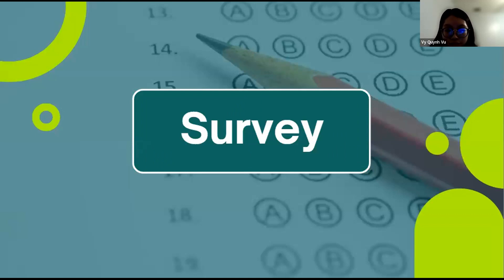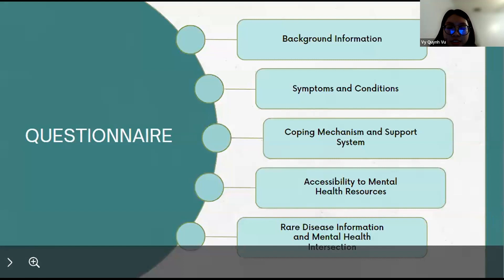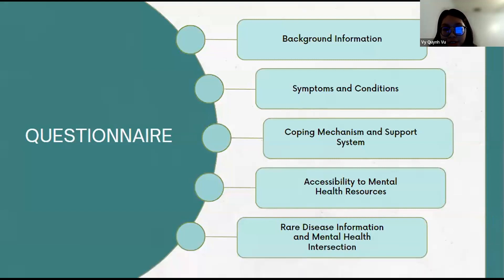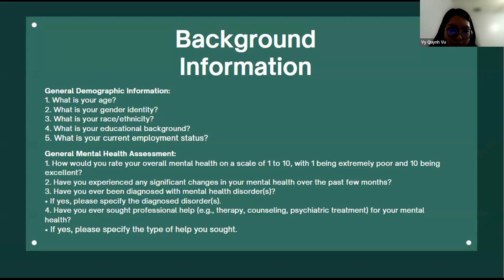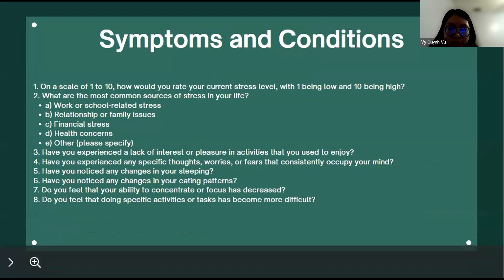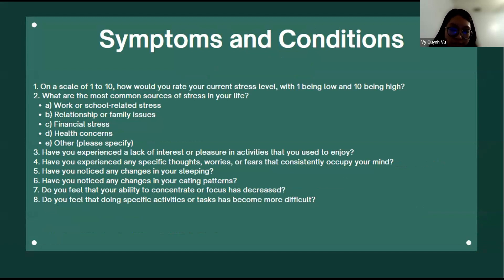On to the survey component. For the survey, I have divided it into five main categories. For the background information, this is where we would collect general demographic information about the individuals, as well as context about the individual's mental health history — this can include their previous diagnosis or any current treatment they are in. The next section is where we can identify the potential signs of the individual's emotional dysfunction, looking at changes in their behaviors and emotional well-being, such as their sleeping habits, eating patterns, and productivity in working.